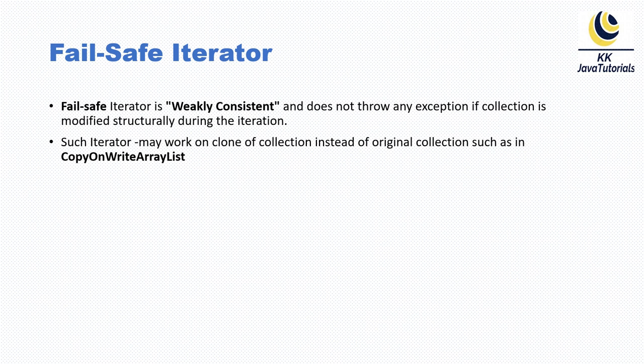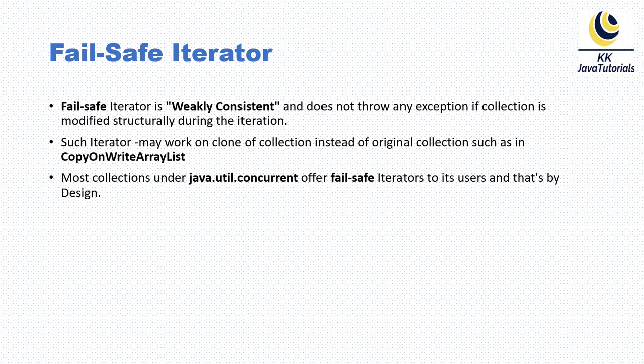Such iterators may work on a clone of the collection instead of the original — this is how CopyOnWriteArrayList works. When you get an iterator from the underlying collection, it makes a clone copy, all modifications happen on the clone copy, and finally that is merged back to the original collection. CopyOnWriteArrayList is the best example of a fail-safe iterator, and ConcurrentHashMap is also an example. Most collections under java.util.concurrent are fail-safe iterators by design.